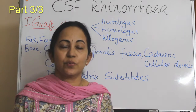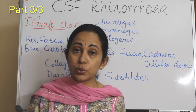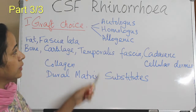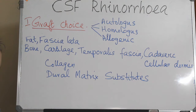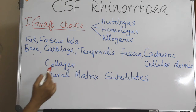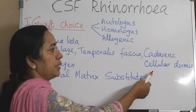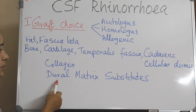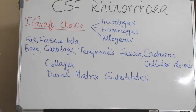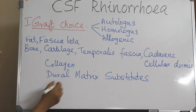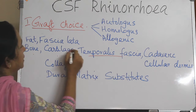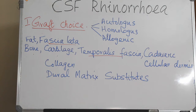There are many techniques for the repair of CSF leak, and the choice of graft material varies a lot — from autologous to homologous and allogenic. The commonly used ones are fat, fascia lata, bone, and cartilage. You can use temporalis fascia, cadaveric acellular matrix, collagen, or dural matrix substitutes. The easiest to harvest from the same area with a reduced rate of infection is temporalis fascia or fascia lata. For obliteration, it is better to use fat.